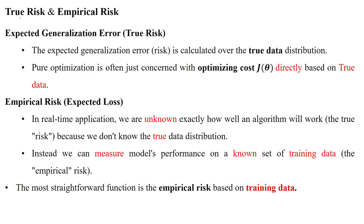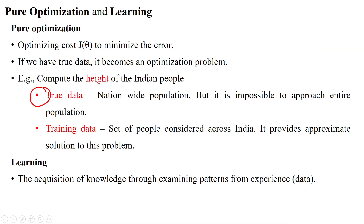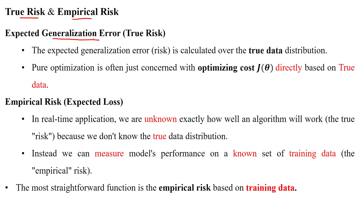What is the difference between true risk and empirical risk? When calculating the output based on true data, there is a possibility of error — that error is called expected generalization error or true risk. It is calculated using the true data distribution. When using true data, such as measuring everyone's height across India, there is still a possibility of error called true risk, and we want to minimize that error using an optimized algorithm.